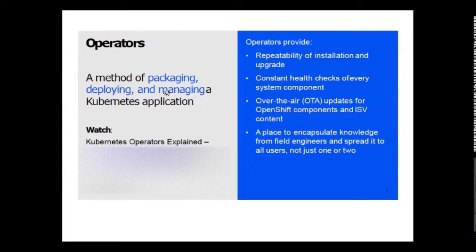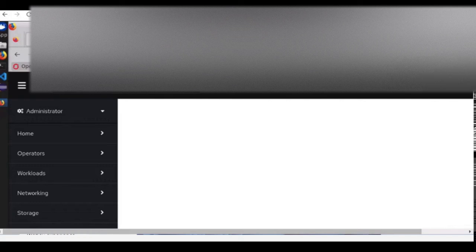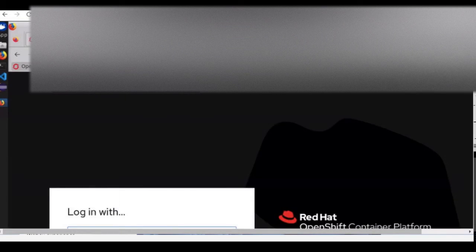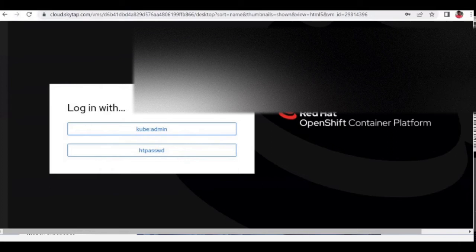Operators are a method of packaging, deploying, and managing Kubernetes applications. They help provide repeatability of installation and upgrades, constant health checks for every system component, and updates for OpenShift components. OpenShift 4 is built on operators, which help manage and maintain containerized applications and the OpenShift console.